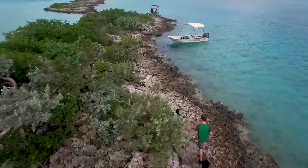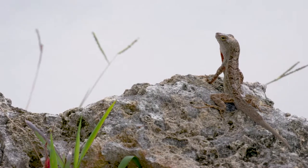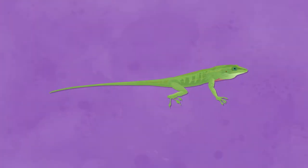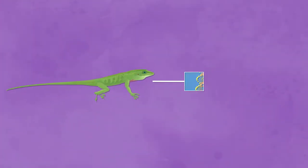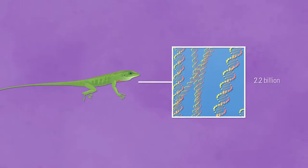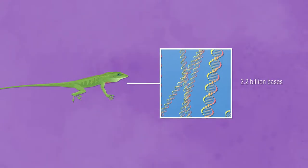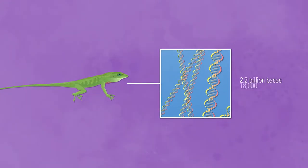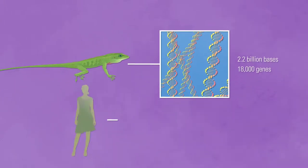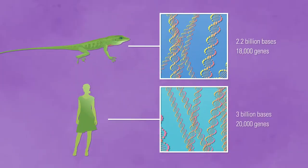An organism's genome is the sum total of all the genes in that organism, and they're responsible for making the organism what it is. The anole genome was the first reptile genome to be sequenced. It's fairly large — 2.2 billion bases — and in those there are about 18,000 genes, which is actually quite similar to the number of genes that humans have.